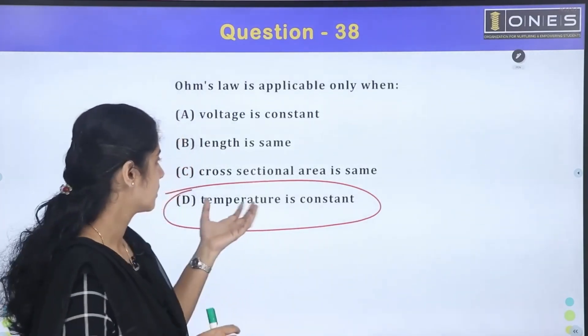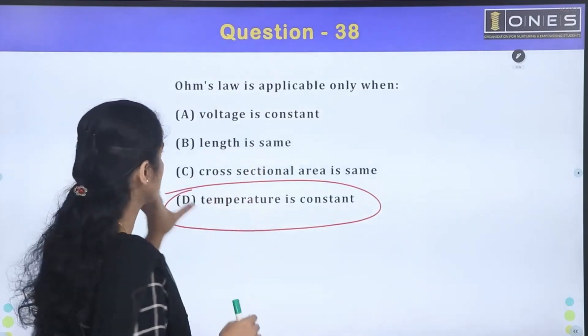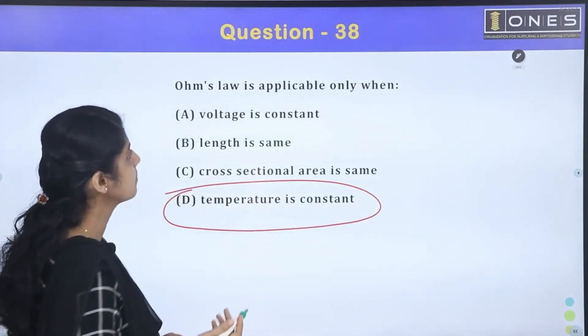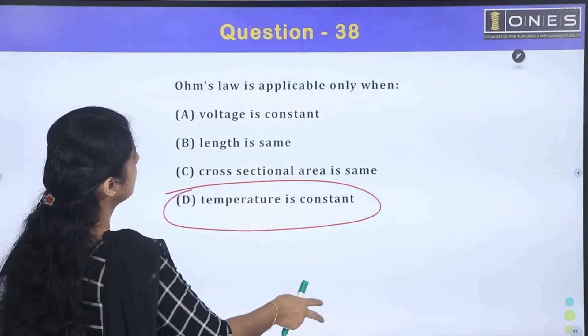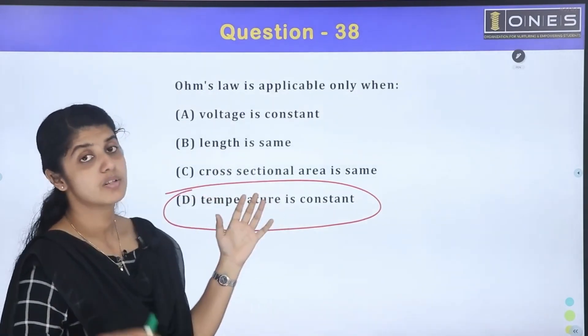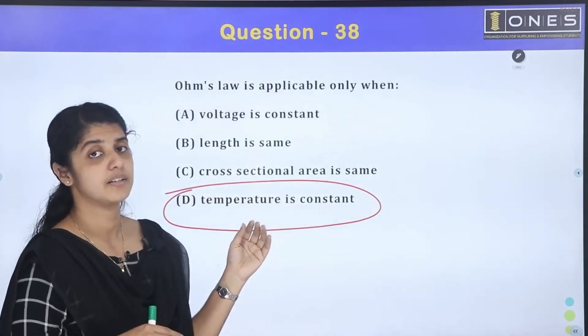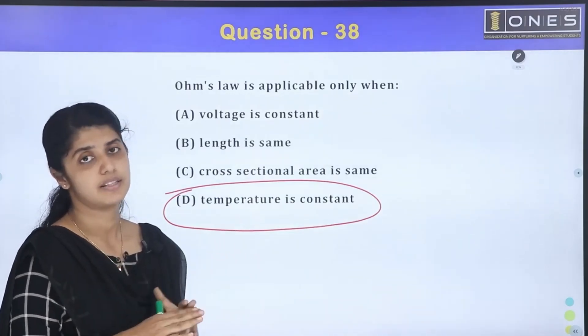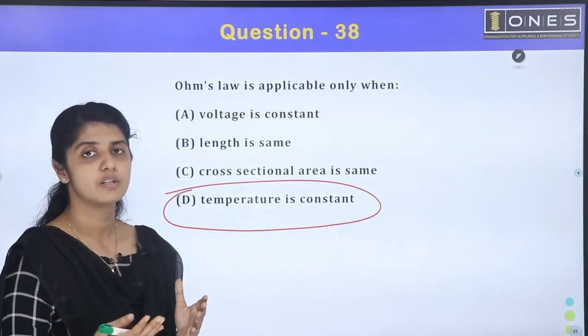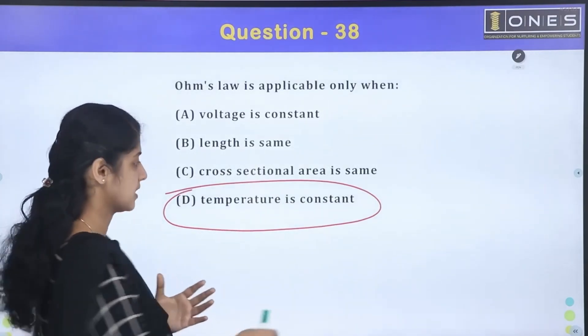Voltage proportional to current, current proportional to voltage, all are correct. Resistance - the proportionality constant. Temperature constant. If the temperature varies, the resistance varies. Positive temperature coefficient materials, negative temperature coefficient materials.